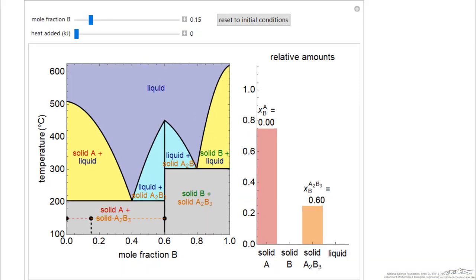We're looking at the simulation, and if we were to change the mole fraction of B, then we notice the black dot moving to the right, and then we have more of the compound A2B3 and less of solid A.